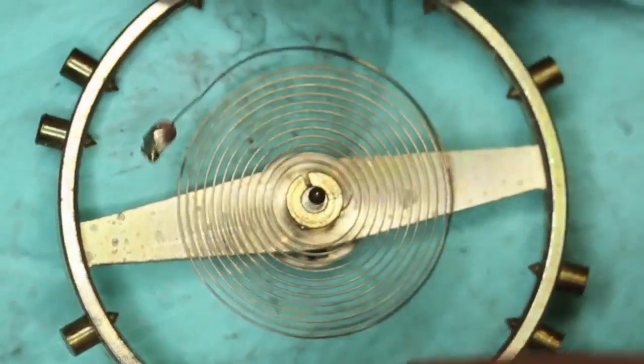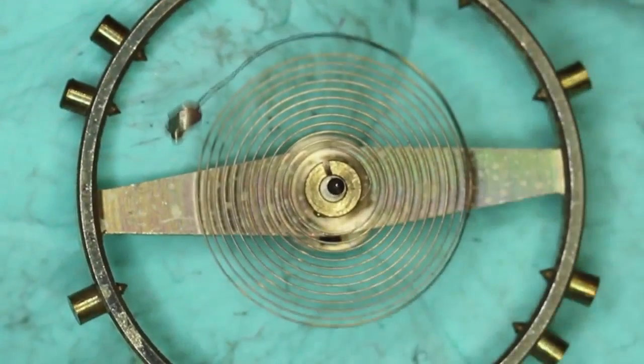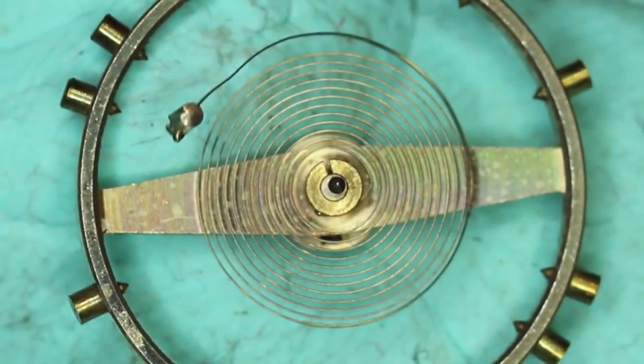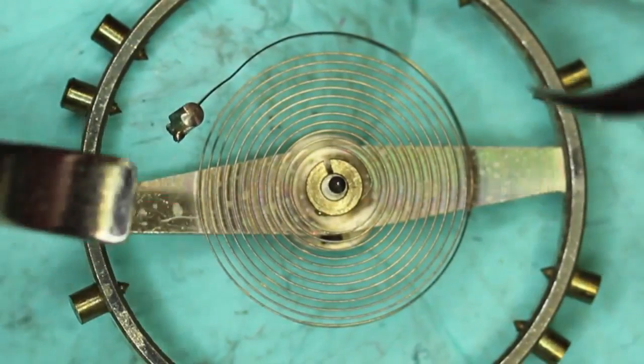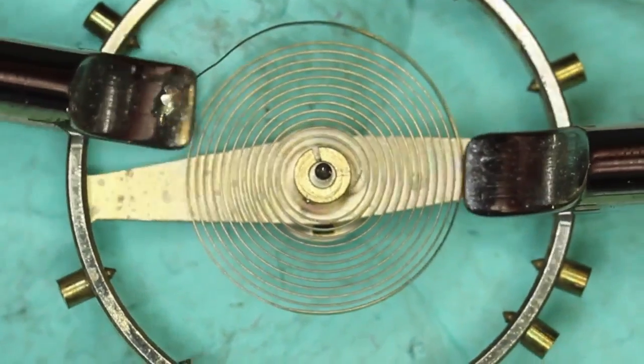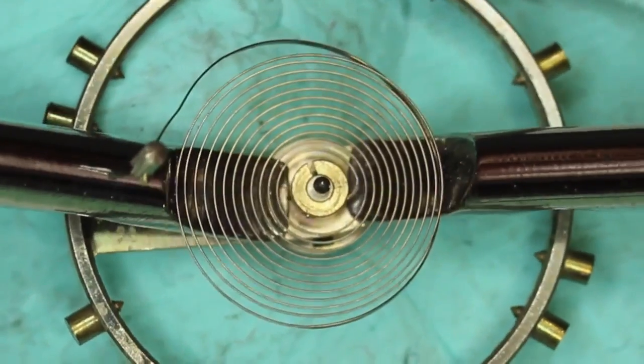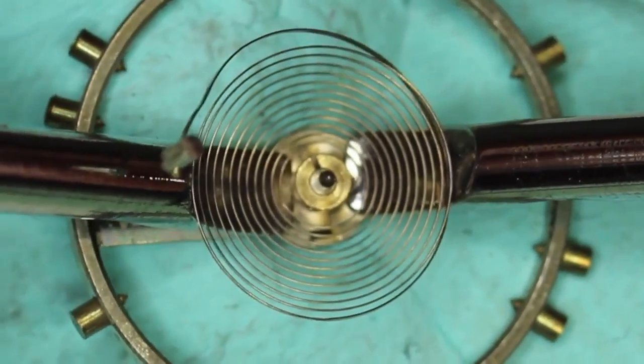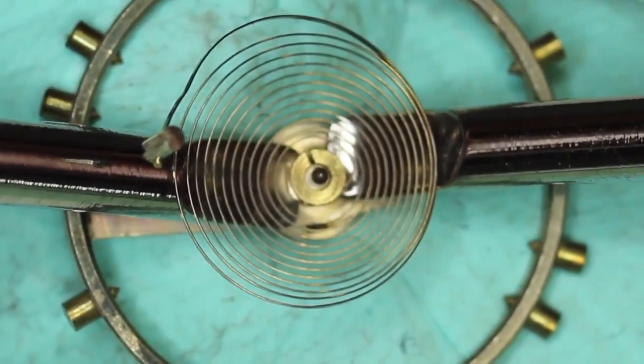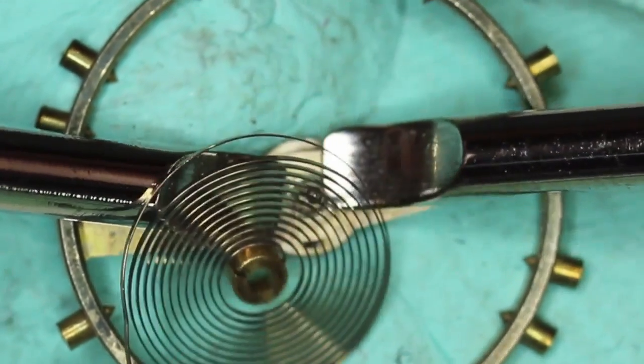And to remove the hairspring collet from the balance staff, I usually use a pair of hand levers, and I slide them under and twist in opposite directions whilst pushing, and that tends to do a good job.